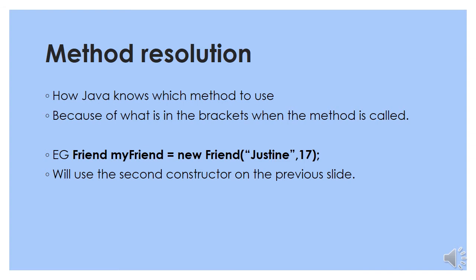Method resolution goes hand in hand with method overloading. It's how Java knows which method to use when there's overloading, and it's determined by what is in the brackets when the method is called. So if we are instantiating a new Friend class object — Friend myFriend = new Friend("Justine", 17) — there we have used the second constructor from the previous slide, because there are two parameters in the brackets.